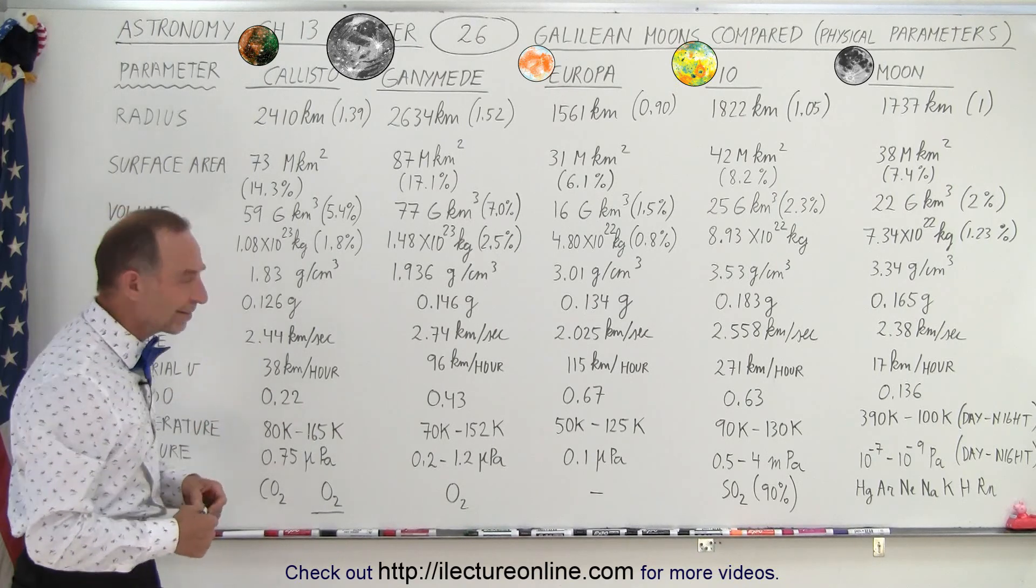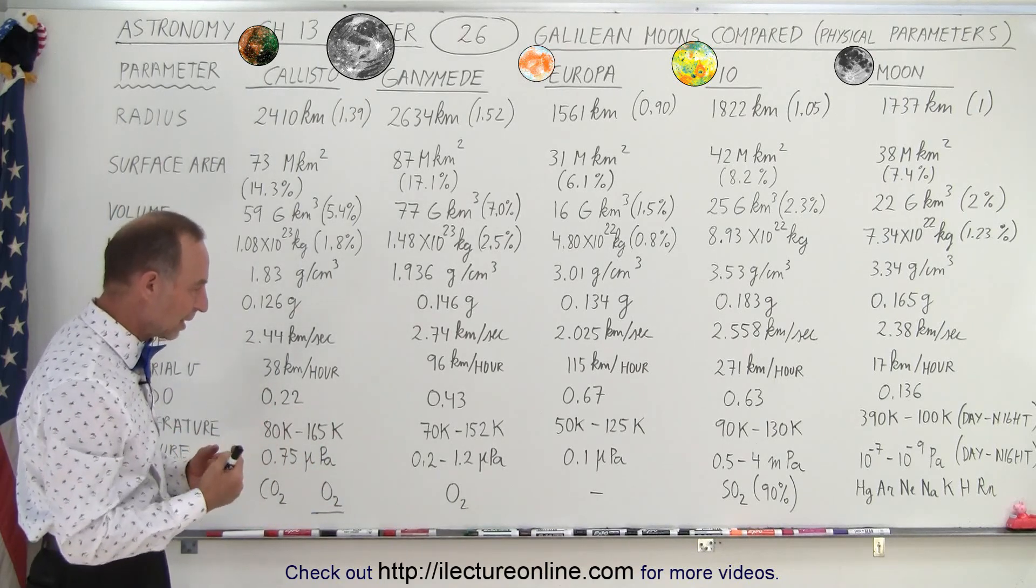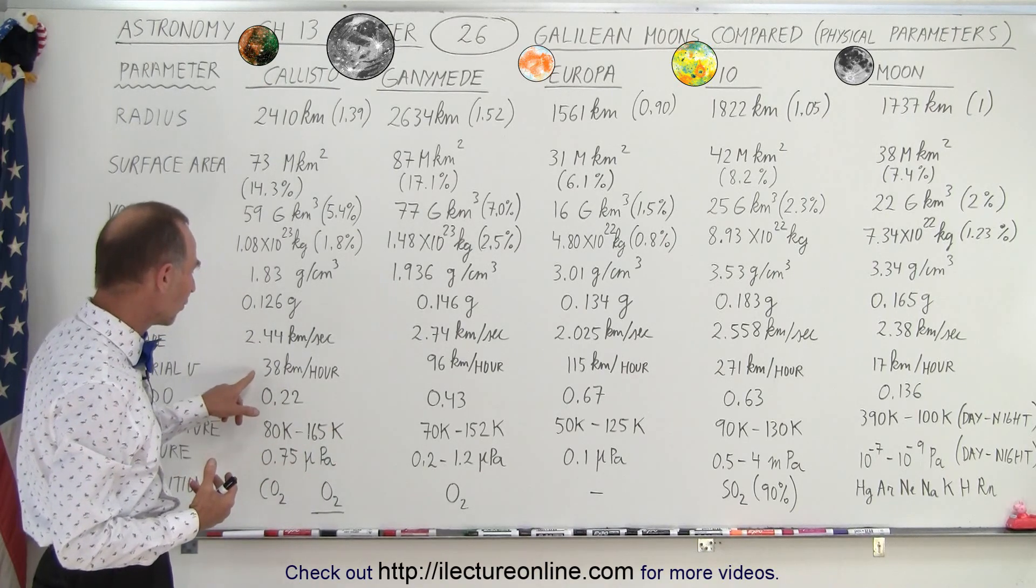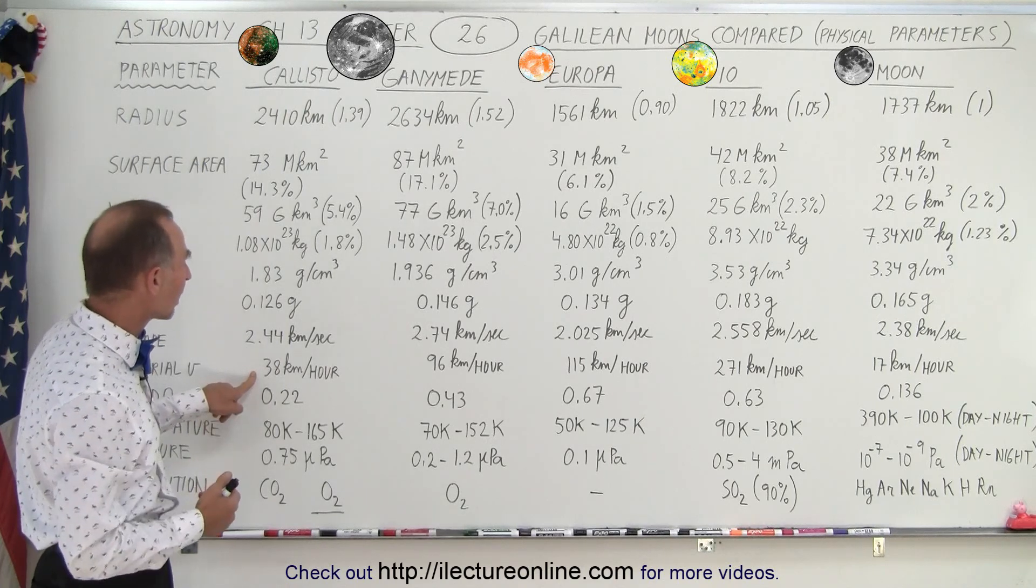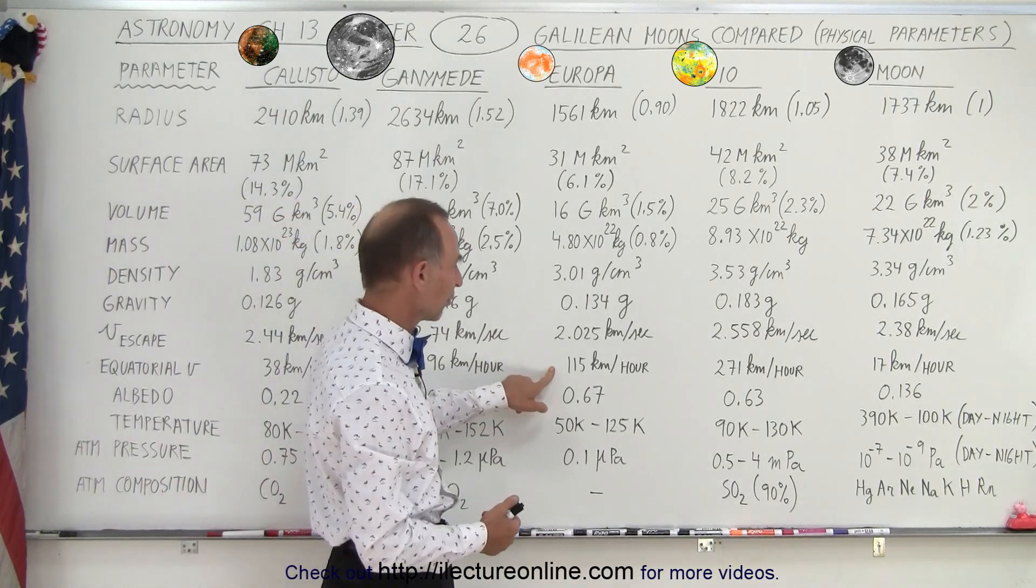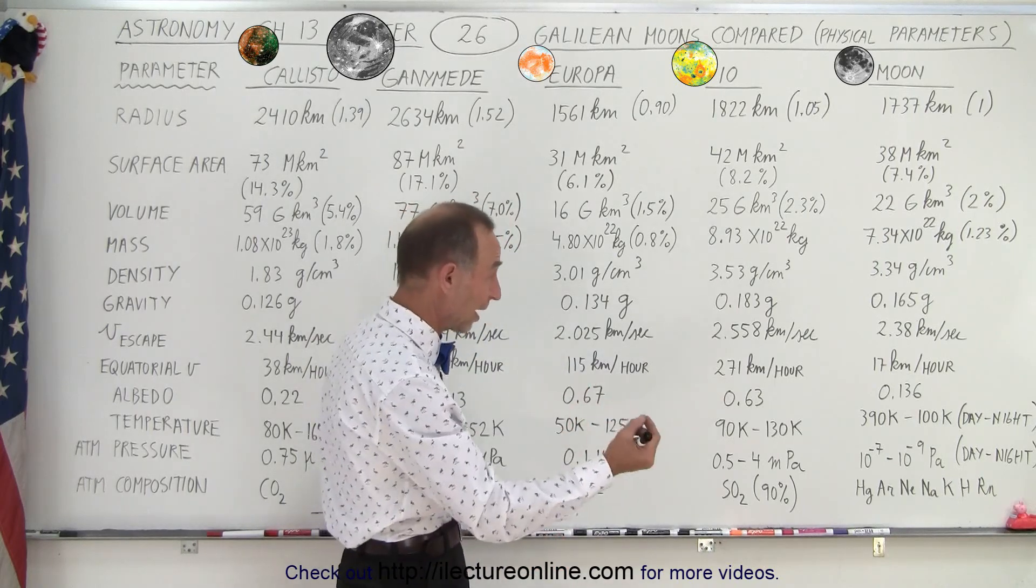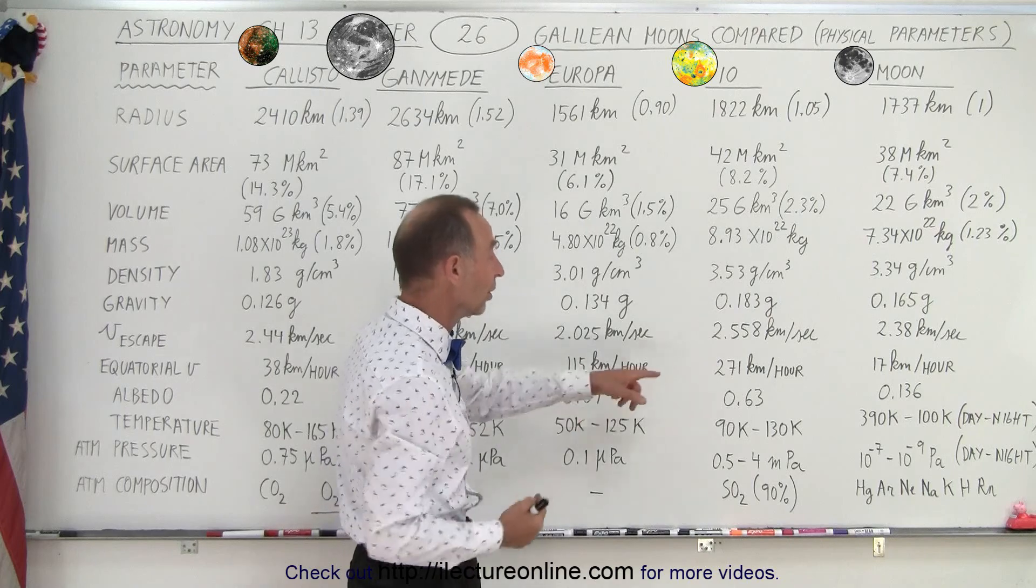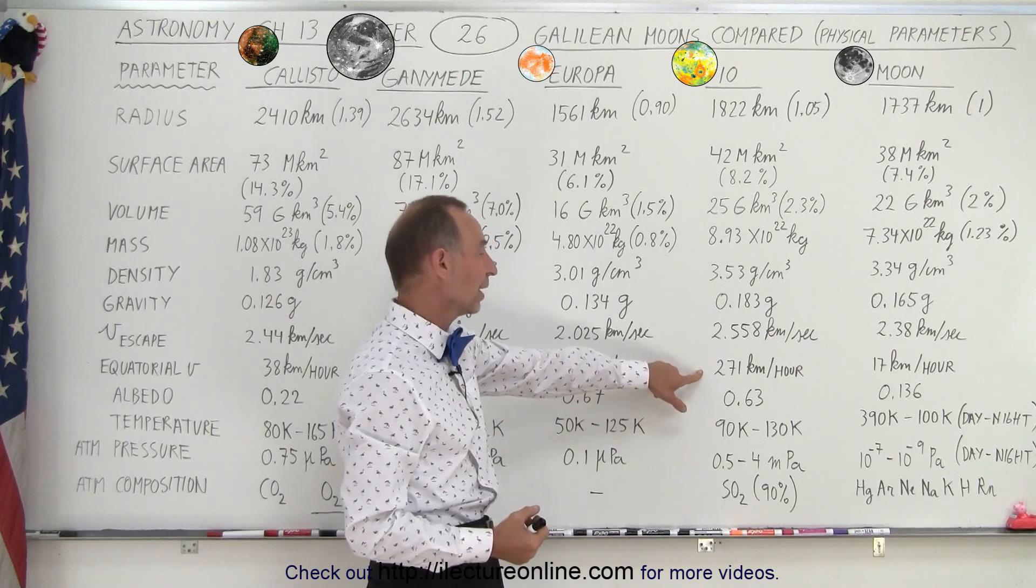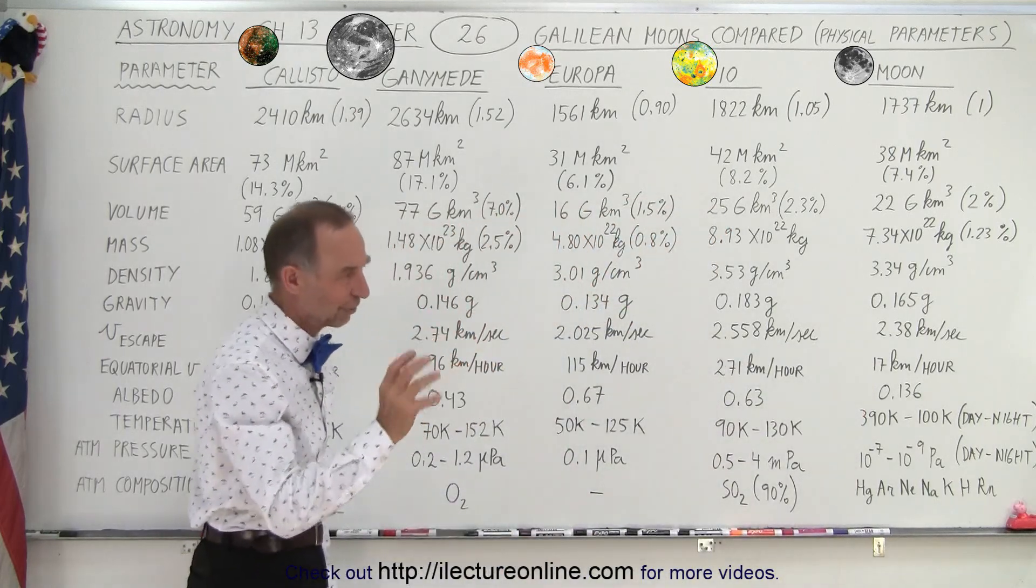The equatorial velocity is kind of interesting because the orbits are, of course, locked in synchronization. The rotational speed or the rotation of the moons is locked in with the orbital motion of the moons. And so notice that at the equator, the speed is 38 kilometers per hour for Callisto, 96 kilometers per hour for Ganymede, 115 kilometers per hour for Europa, and 271 kilometers per hour for Io. That's quite fast. So when you're on the equator of Io, you're moving quite fast because the orbital speed is large and the orbital period is small, and therefore the rotational speed must be very large. Compare that to the moon. It's only 17 kilometers per hour. The moon rotates very, very slowly.